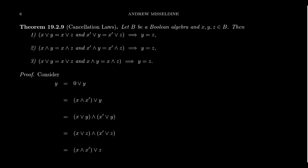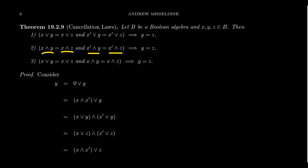I want to prove that in a Boolean algebra we have cancellation laws. The first cancellation law: if x join y equals x join z, and x-complement join y equals x-complement join z, then y equals z. Similarly, if x meet y equals x meet z, and x-complement meet y equals x-complement meet z, then y equals z. The third law: if x join y equals x join z and x meet y equals x meet z, then y equals z.